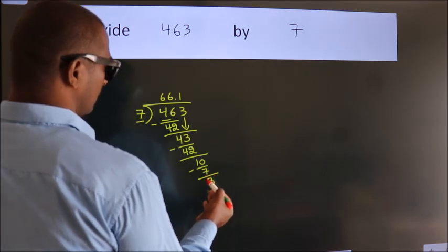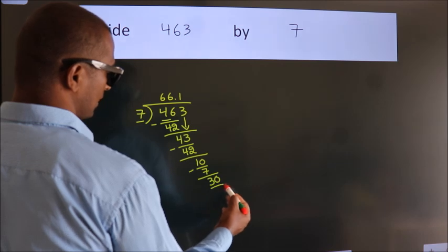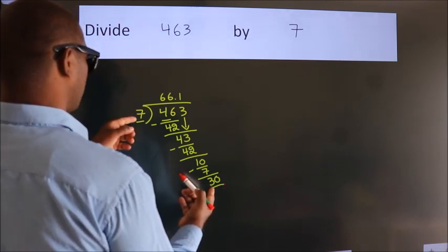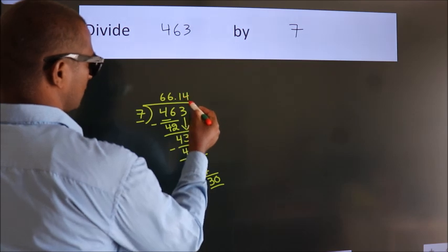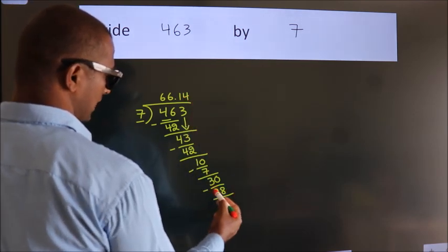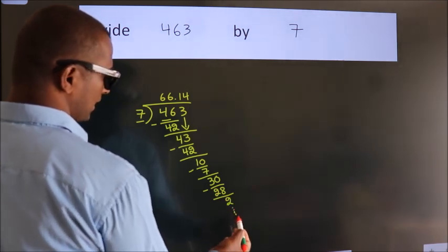After this, we already have the decimal, so directly take 0. So 30. A number close to 30 in the 7 table is 7×4=28. Now we subtract. We get 2, and you continue the division.